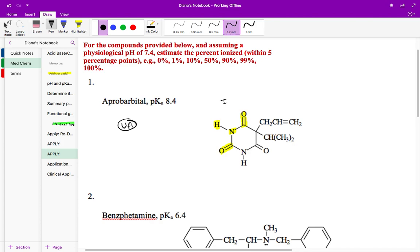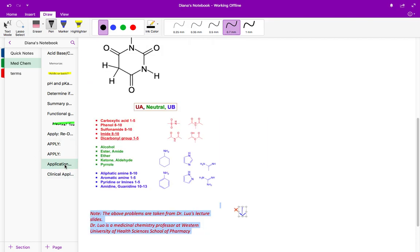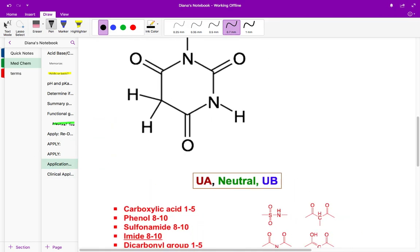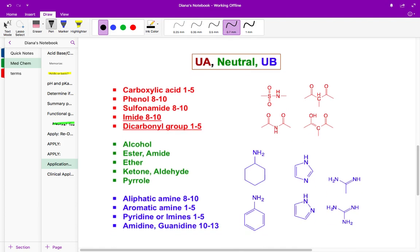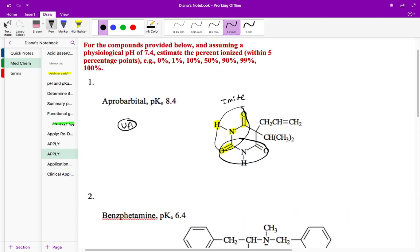Amide functional group is when you have a nitrogen with a hydrogen directly in between two carbonyls. If you remember, an amide is actually one of the acidic functional groups we talked about. So an amide is a UA. I'm going to write amide here. We also see another amide right here. Two amides right next to each other. And that's the UA form. Amides have a pKa of, if you remember, these pKas we talked about. So an amide is an acid. An amide is going to have a pKa of 8 to 10.